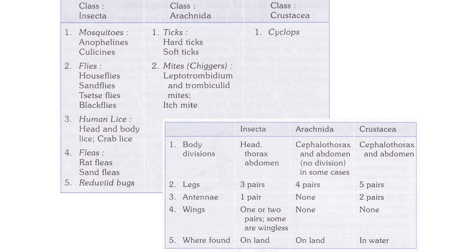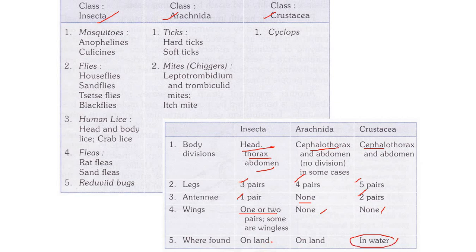The arthropods are broadly divided into Insecta, Arachnida, and Crustacea. Insecta has head, thorax, and abdomen separately. Arachnida and Crustacea have a cephalothorax — head and thorax combined. Legs are three pairs, four pairs, and five pairs respectively. Antennae: one pair, zero, and two in Crustacea. Wings: one or two pairs in Insecta, none in Arachnida or Crustacea. Crustacea lives in water; the others live on land.